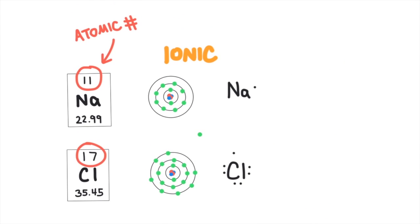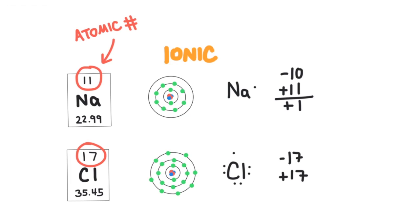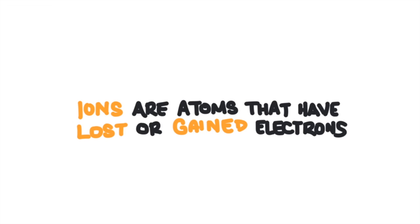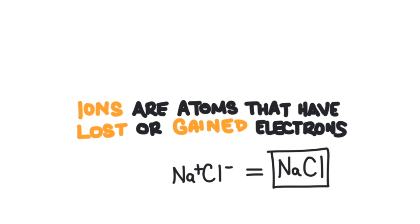Sodium originally had 11 electrons. Electrons are negatively charged. It also had 11 protons, which are positively charged, as indicated by the atomic number of sodium. Since sodium lost an electron, it only has 10 electrons, so it has one more proton than electrons — giving sodium an overall positive charge. Chlorine had 17 electrons and 17 protons; now it has 18 electrons and 17 protons, so it is negatively charged overall. Ions are atoms that have lost or gained electrons, and ions have a charge. So sodium has a plus one charge and chlorine has a negative one charge. They stick together — we just made table salt. The formula for table salt, sodium chloride, is NaCl.